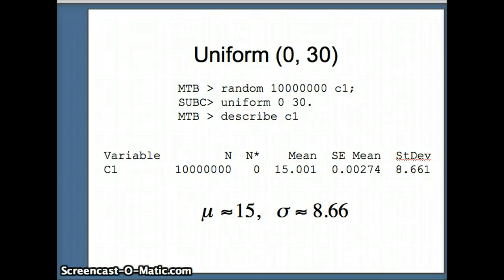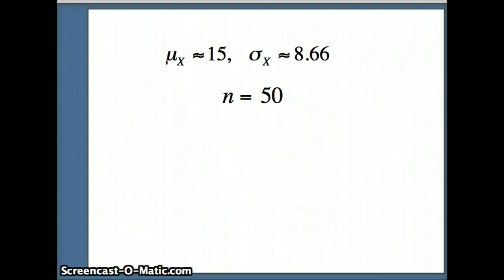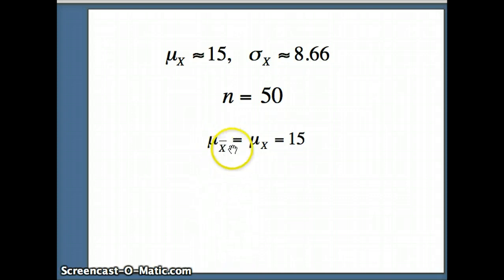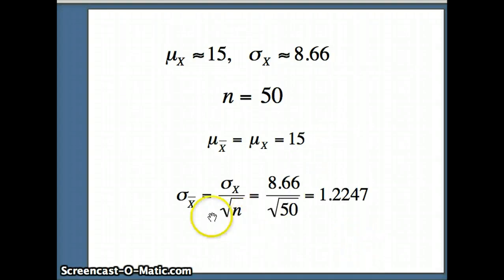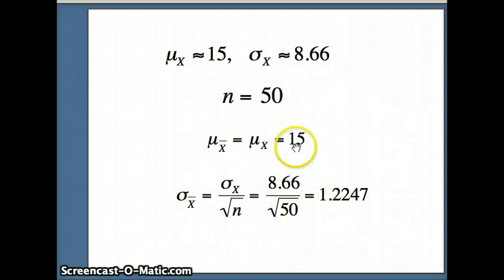Now we want the mean and standard deviation for the distribution of X̄. We have μ_x=15, σ_x=8.66, and n=50. The central limit theorem tells us the X̄ values will follow a normal distribution, and that the mean of X̄ equals the underlying mean — which is 15 — and the standard deviation of X̄ equals the underlying standard deviation divided by √n: 8.66 / √50 ≈ 1.2247. These are the mean and standard deviation for the distribution of averages.